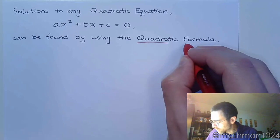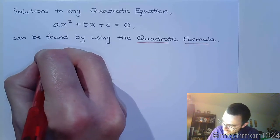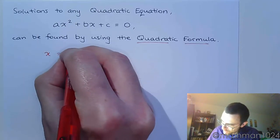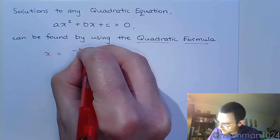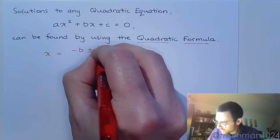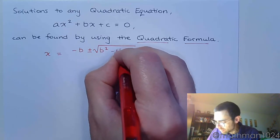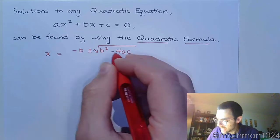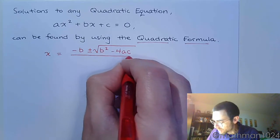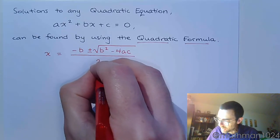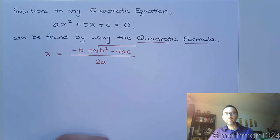Now, quadratic formula is this: x is equal to negative b plus or minus the square root, big square root, of b² - 4ac, that's all one term, all divided by 2a.